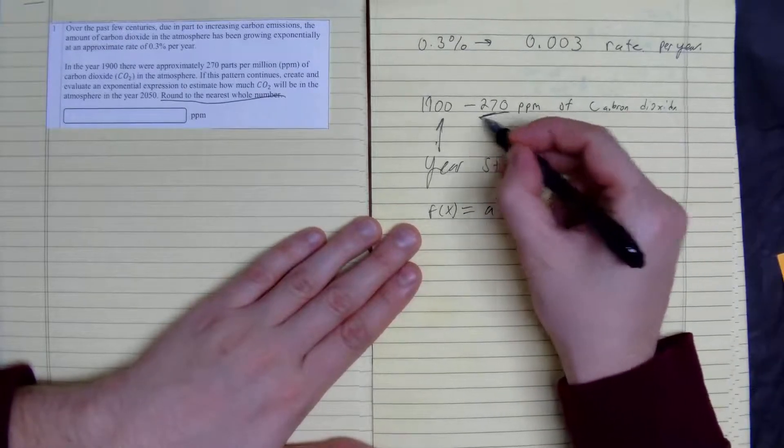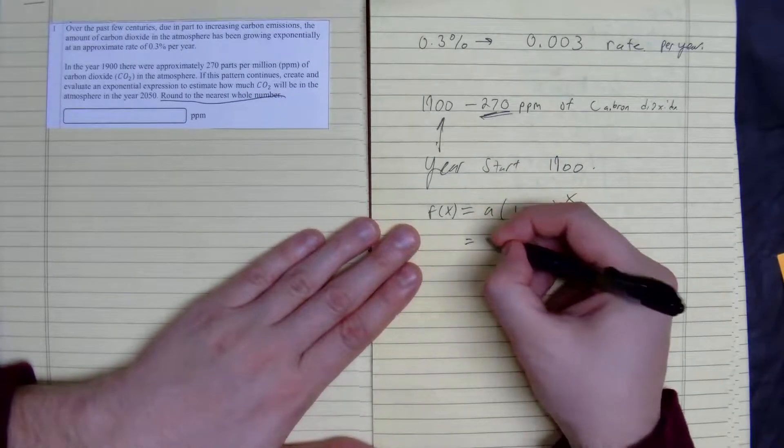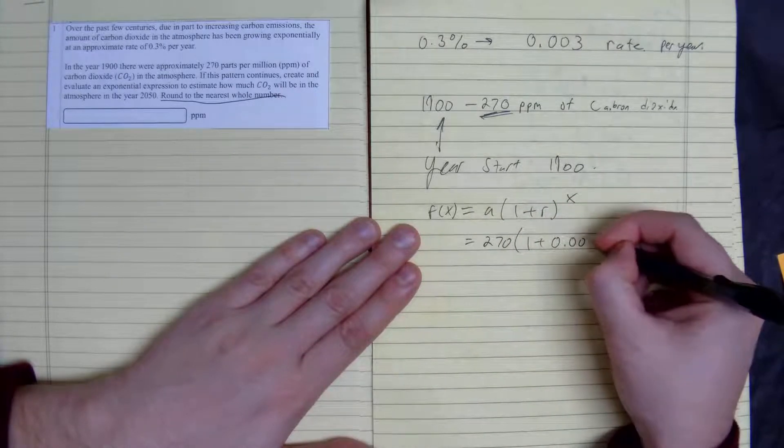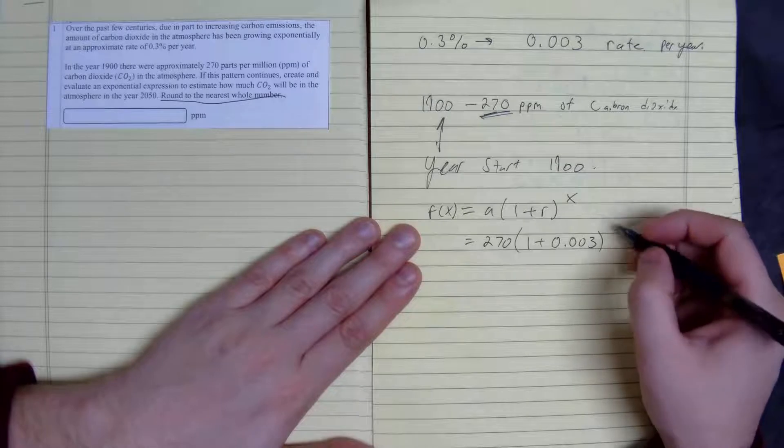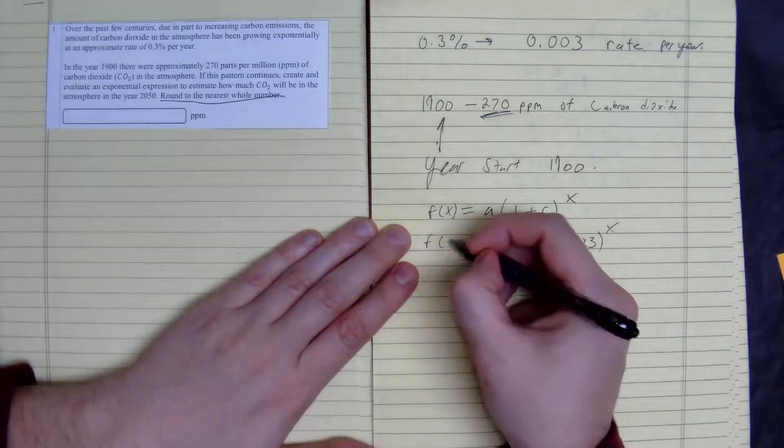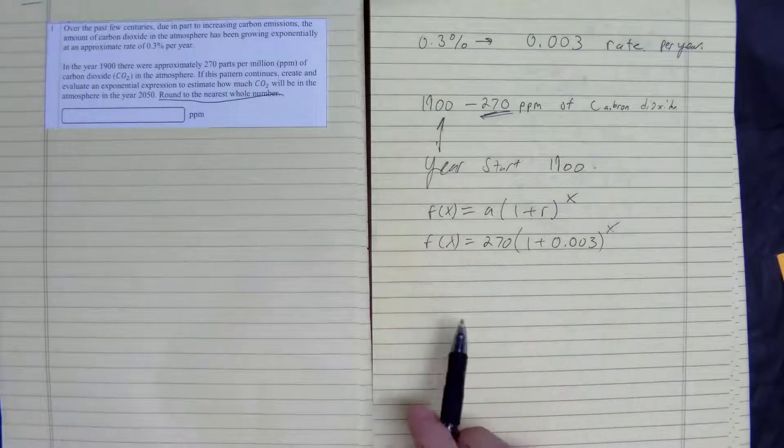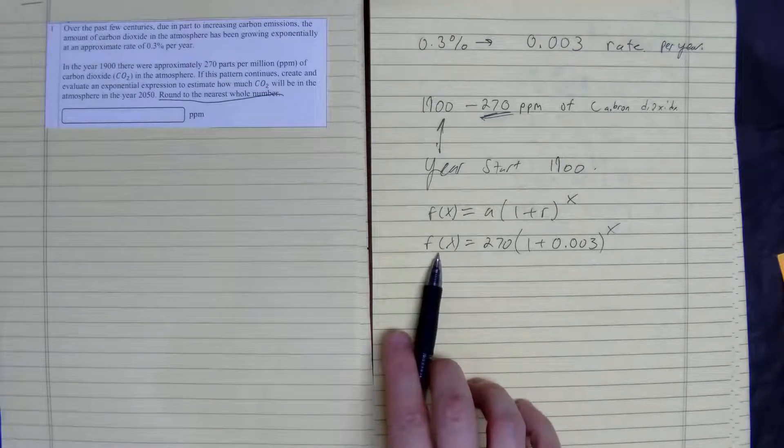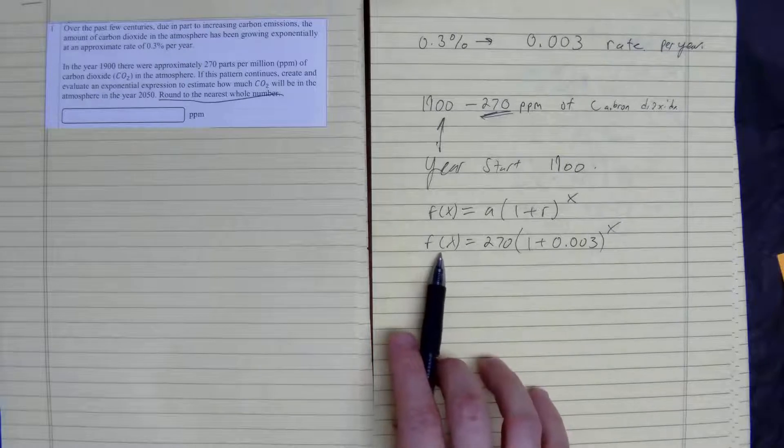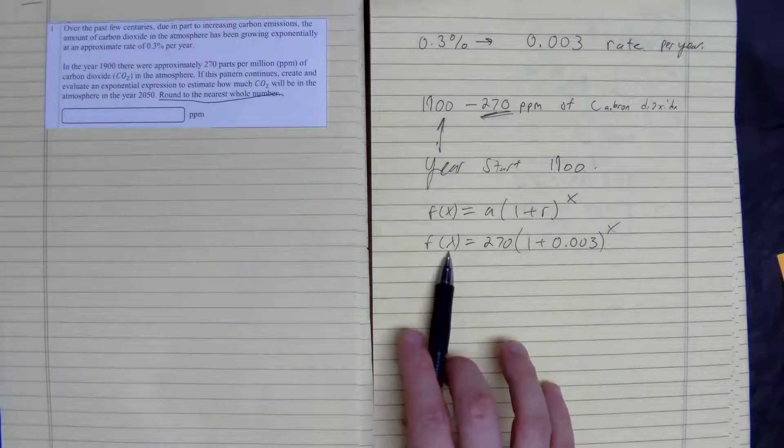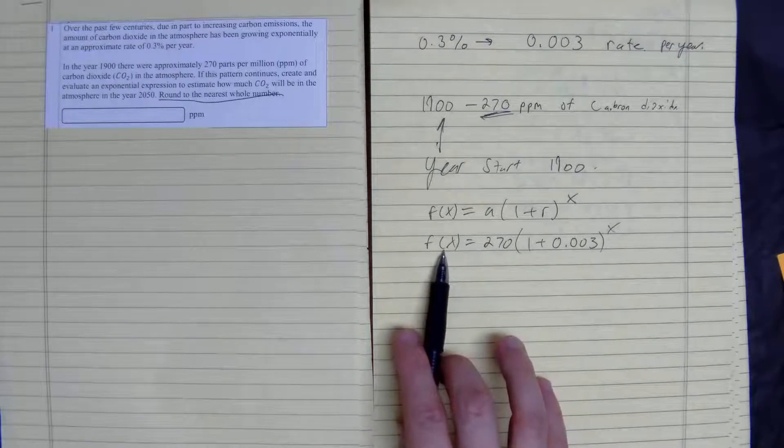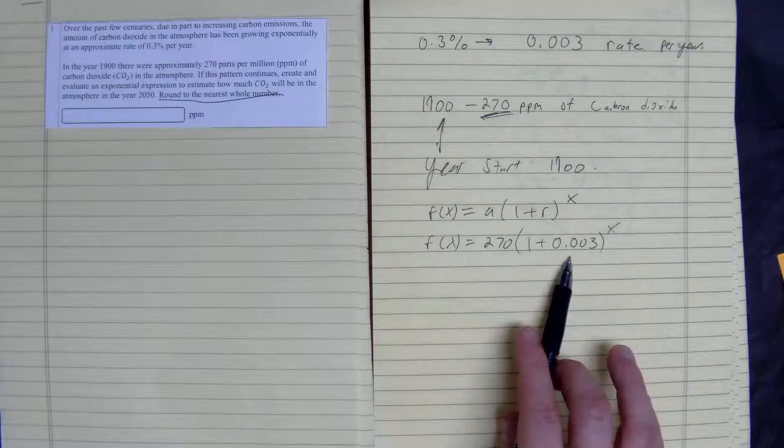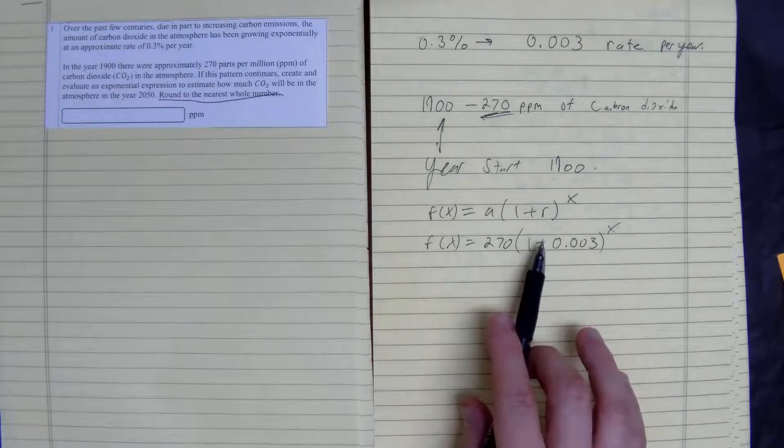Our starting point, since they gave it to us, is 270. So 270 times 1 plus 0.003 to the power of X. Our function that we just wrote is the amount of years past 1900 will give us the amount of carbon dioxide in our atmosphere.